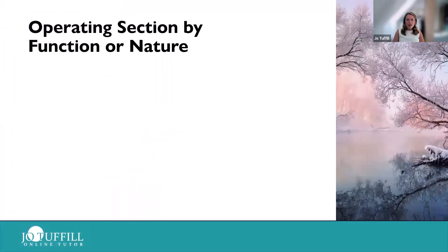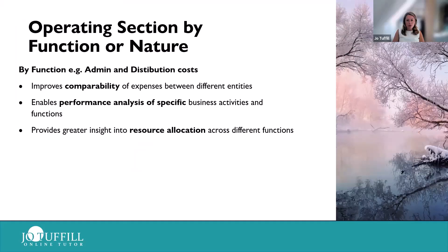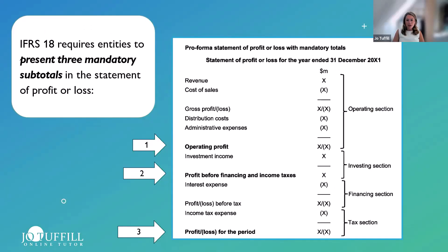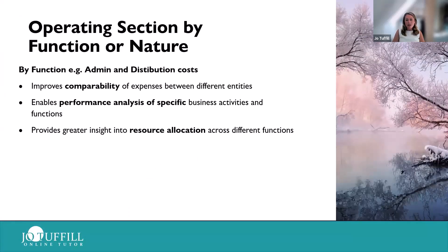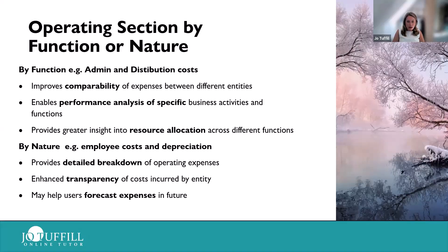You are allowed to present the operating section by function or by nature. By function would show items such as admin and distribution costs. The benefits include improved comparability between entities, better performance analysis of specific business activities, and greater insight into resource allocation. By nature would show items such as employee costs and depreciation. This provides a detailed breakdown of operating expenses, enhanced transparency of costs, and may help forecast future expenses. Part of the syllabus is to discuss the benefits of each approach.